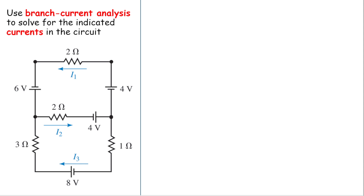We will use branch current analysis to solve for the indicated currents in the circuit. For branch currents we need to use both KCL and KVL. I will use KCL first at this node here — let's name this node A. Let's do KCL at node A.